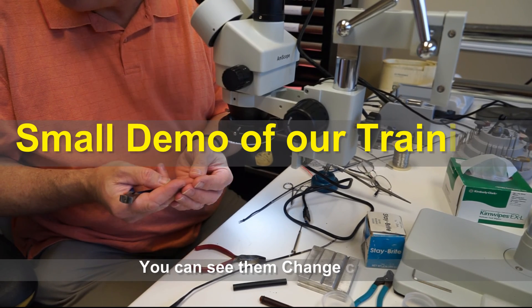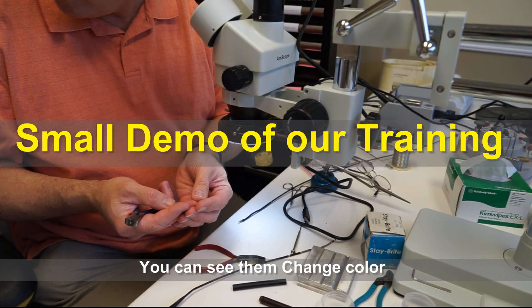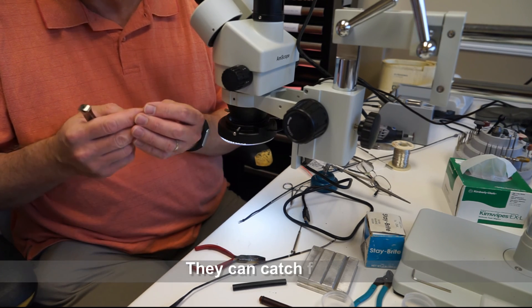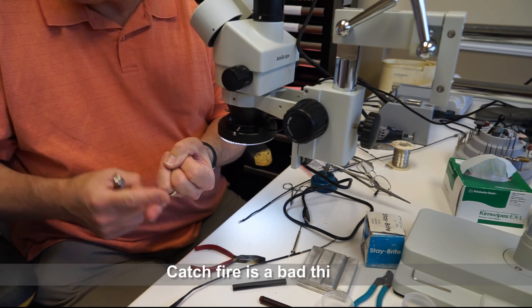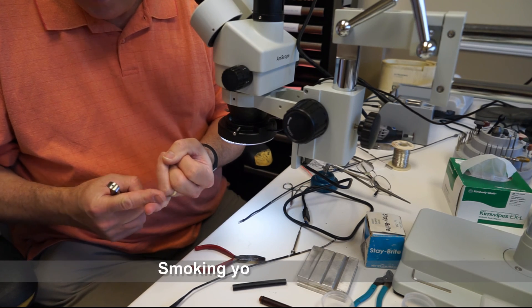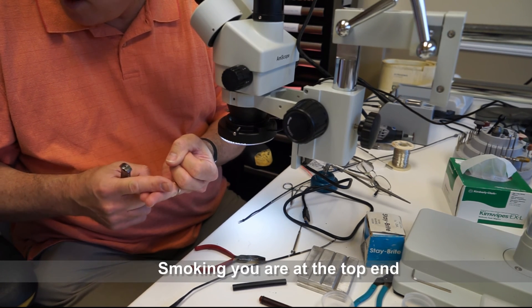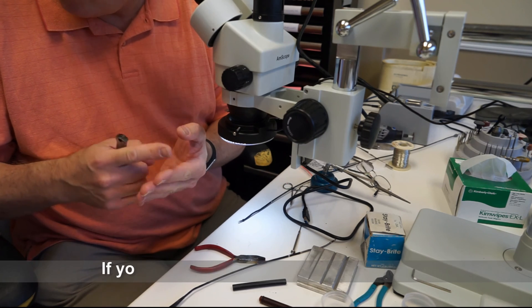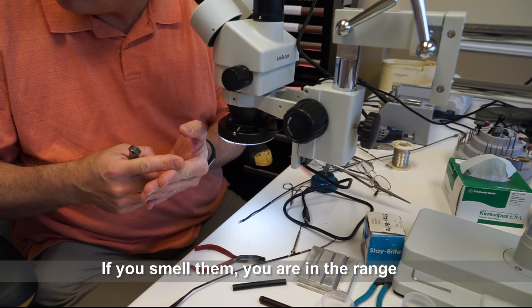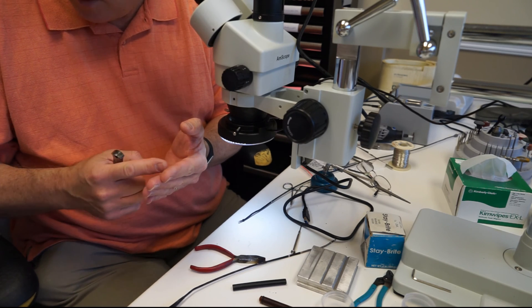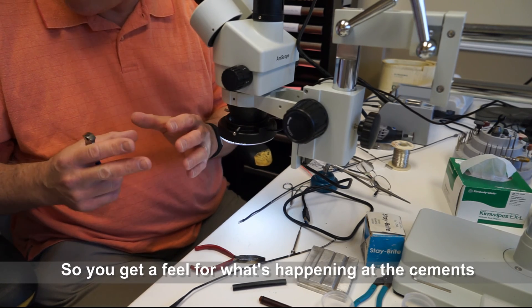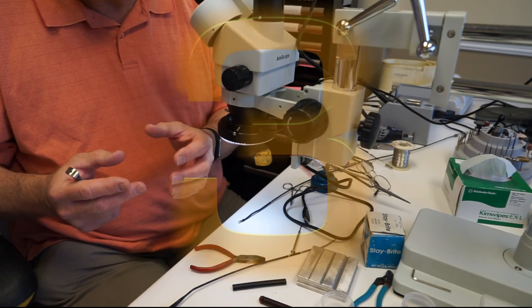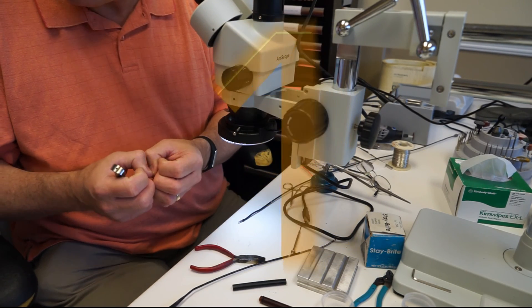You can see them change color, they can start smoking, they can catch fire. Catch fire is a bad thing. Smoking, you're at the top end. If they change color, that's okay. And if you smell them, you're in the range. So you get a feel for what's happening with the cements. You want to break the bond, but you don't want to scorch the optics.